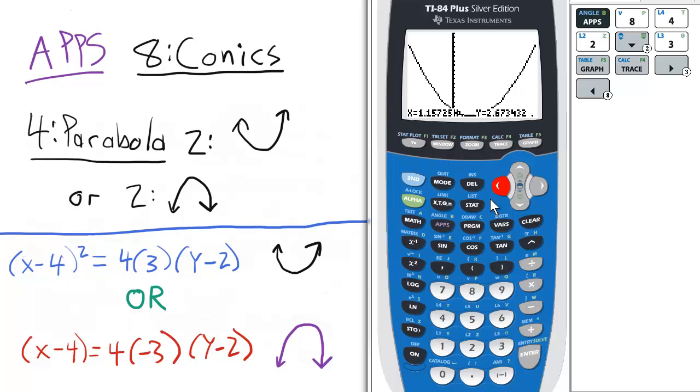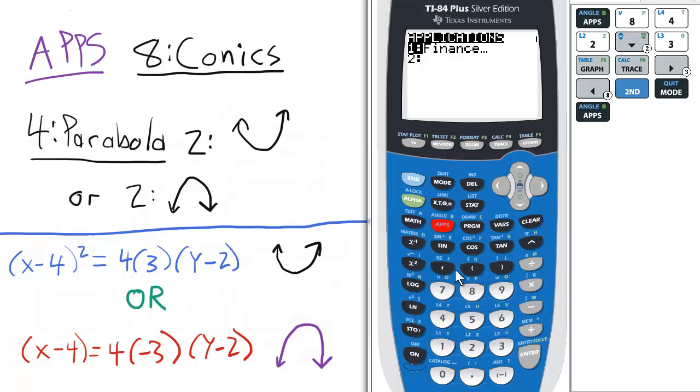I can show you how it opens down by just changing the value of P. First I'll quit, go back to apps, 8, 4, 2.